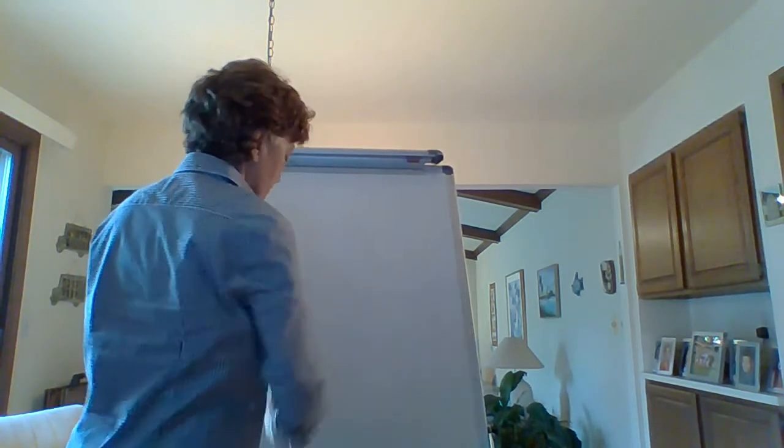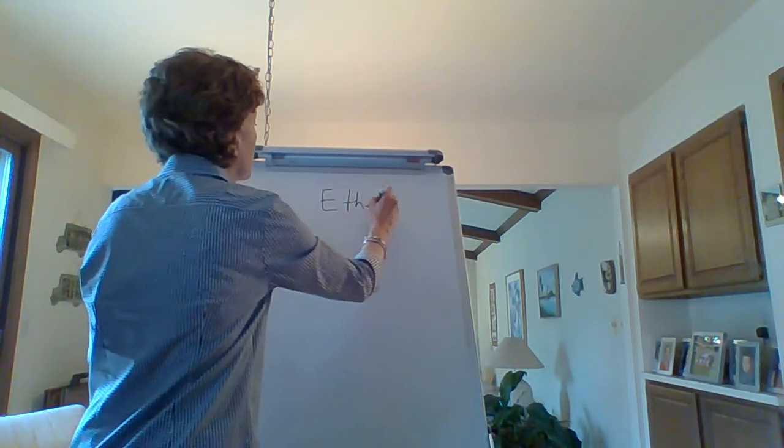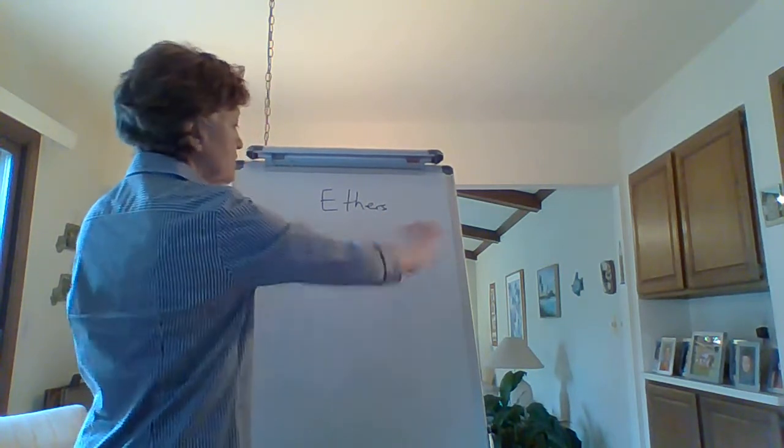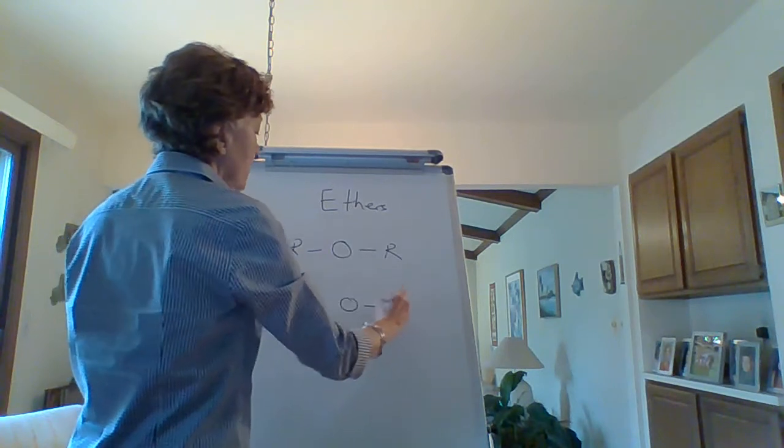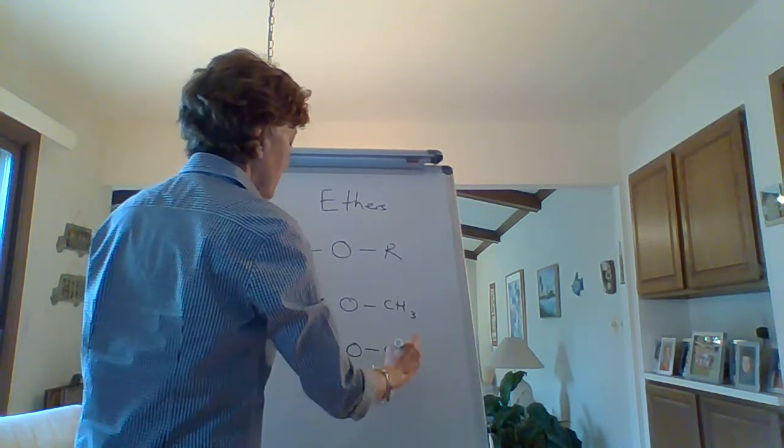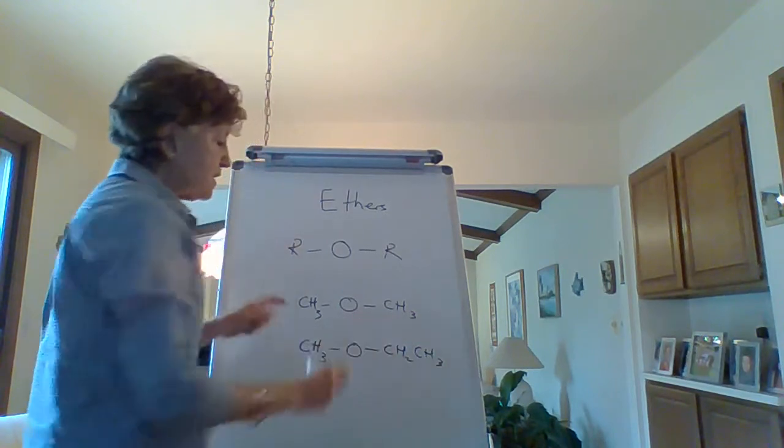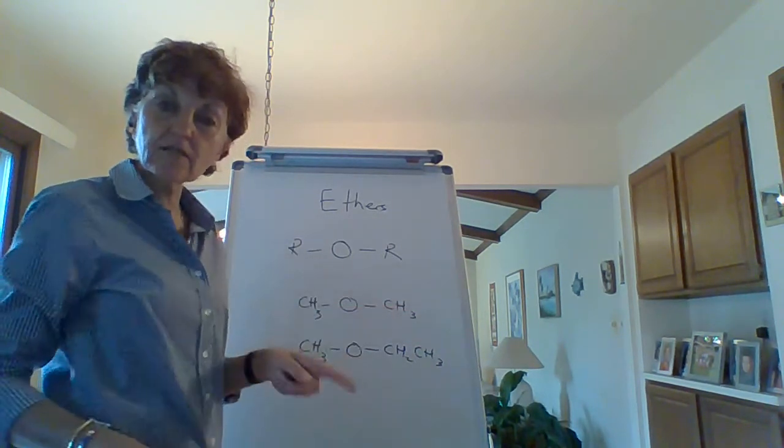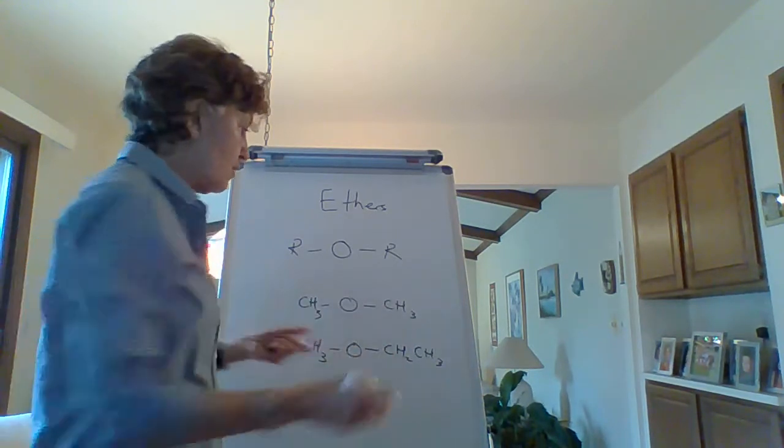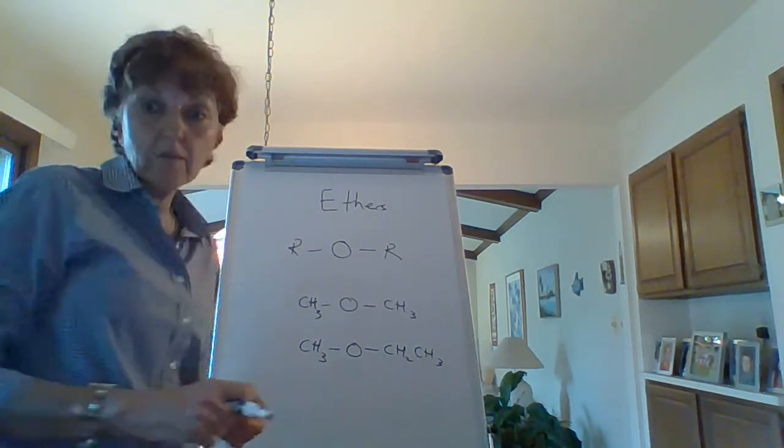Let's move on to ethers. Ethers have an oxygen between two R-groups. This R-group is just the rest of the molecule. You could have a methyl here and a methyl here, or an ethyl here and a methyl here. You have alkyl groups on either side of the oxygen, and that tells you it's an ether.